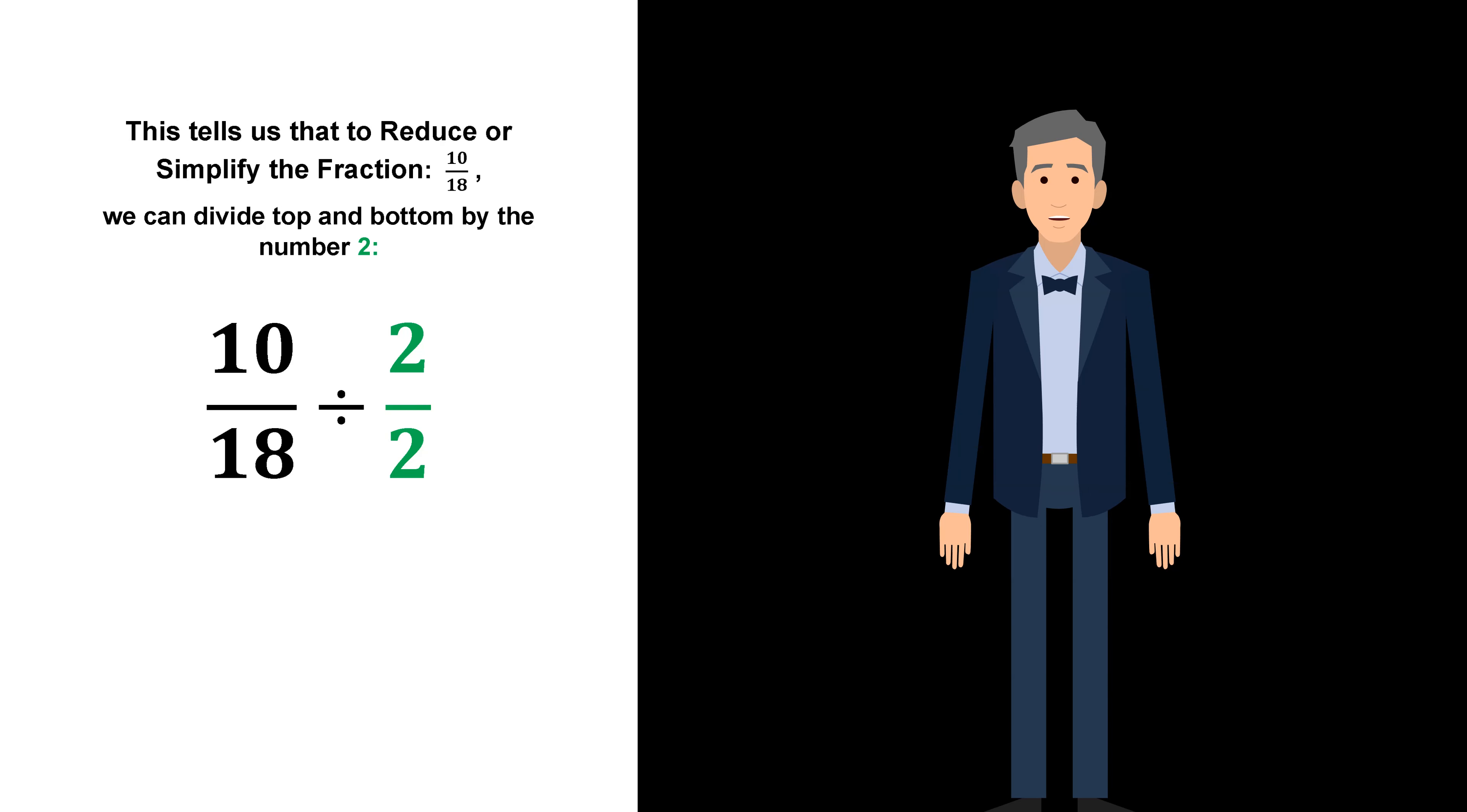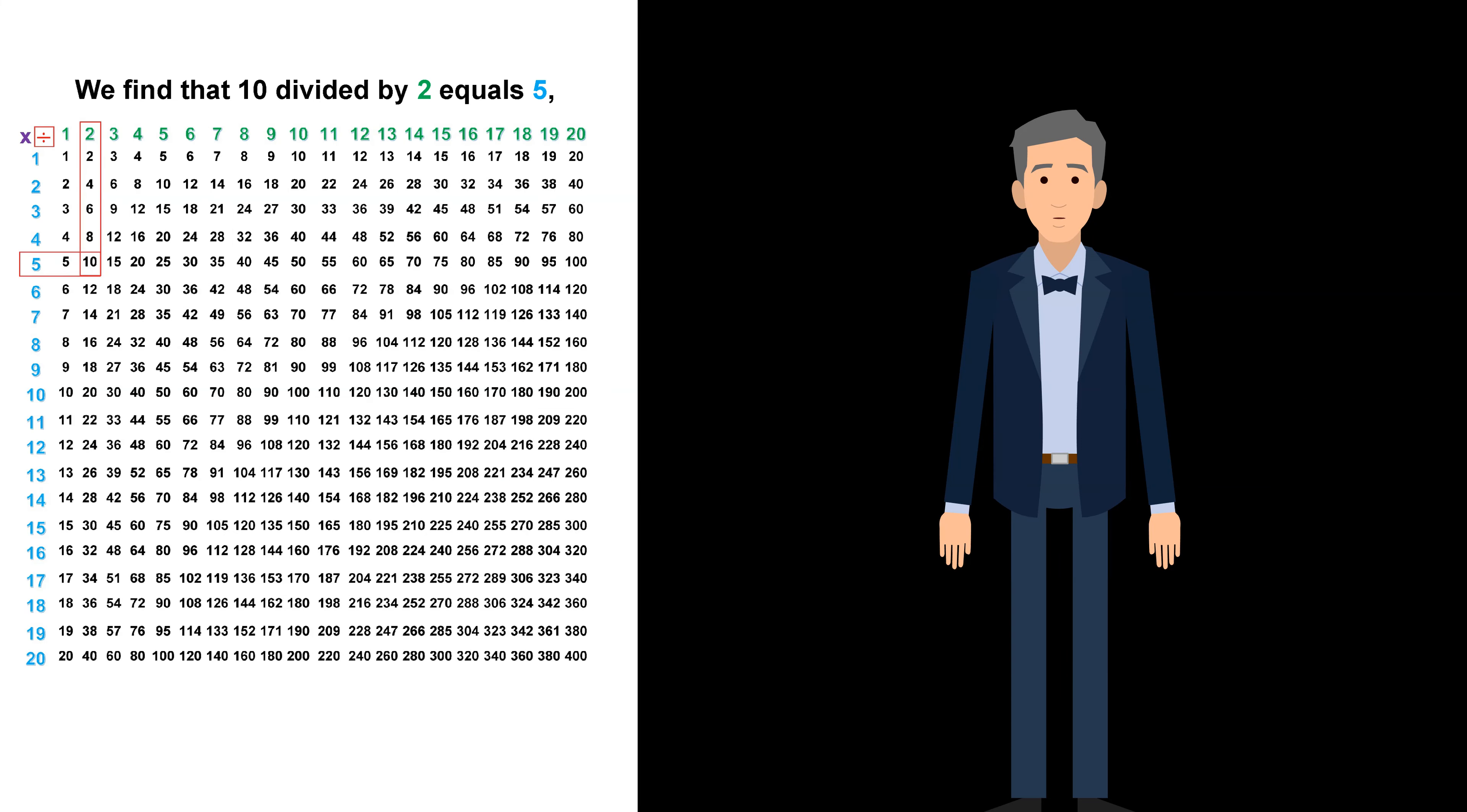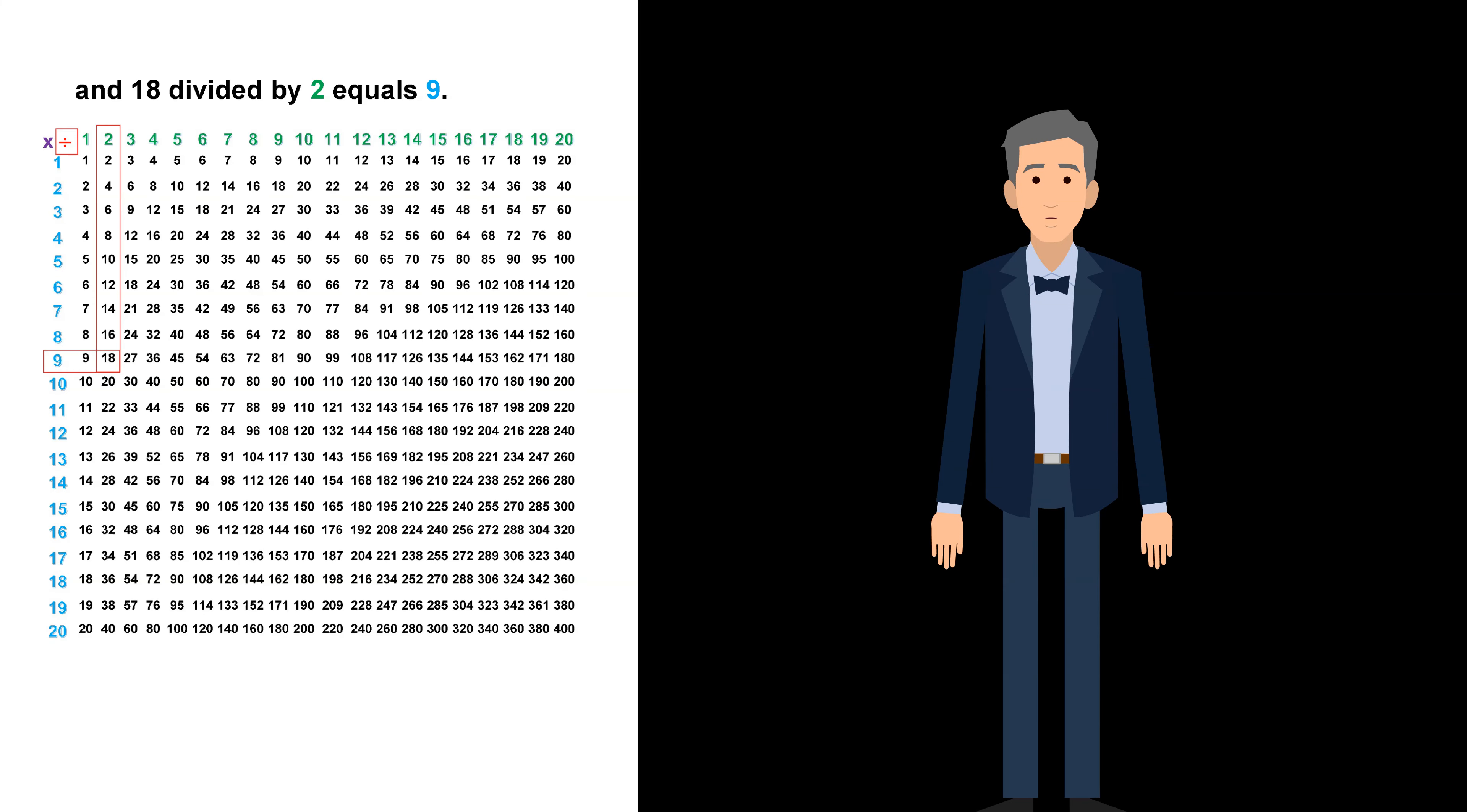This tells us that to reduce or simplify the fraction 10 18ths, we can divide top and bottom by the number 2. Looking at a multiplication or division chart, we find that 10 divided by 2 equals 5, and 18 divided by 2 equals 9.